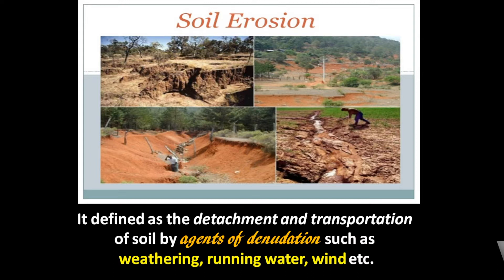The depletion of soil and its nutrients is further speeded up by faulty and unscientific methods of farming. Soil erosion thus occurs when the rate of removal of soil particles and soil nutrients is in excess of the rate of soil formation.